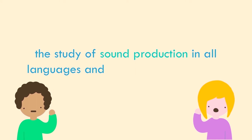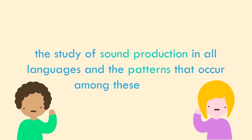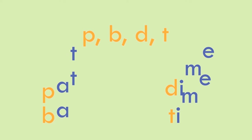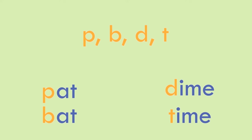Phonology is the study of sound production in all languages and the patterns that occur among these sounds. The distinct units of sounds in any language that distinguish one word from another are called phonemes, like P, B, D, and T. Phonology influences the meaning of a word or phrase, even with the smallest phoneme change.